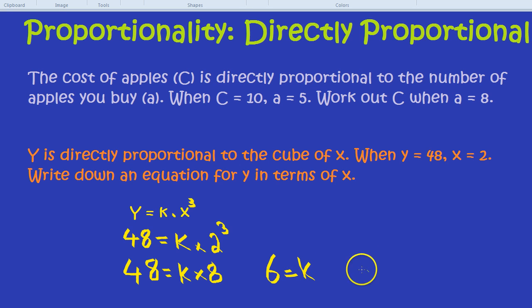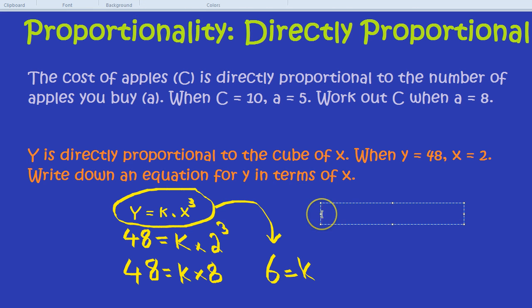But that's not our answer, because the question was, write down an equation for Y in terms of X. You might be wondering, I thought we already had an equation, Y equals K times X cubed. But now we can write that equation knowing what K is. So we can write Y equals 6 times X cubed. There we have it. So Y equals 6X cubed.